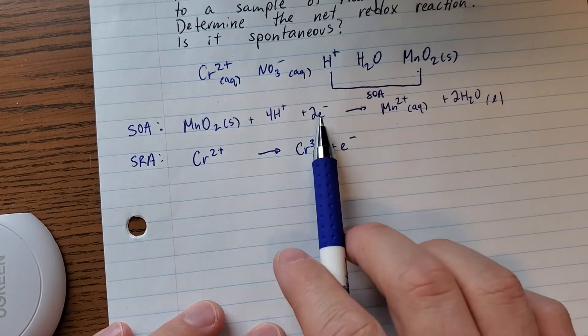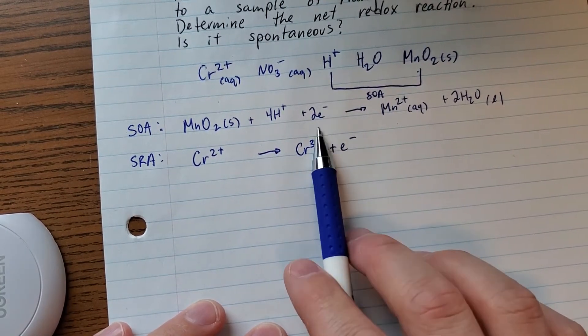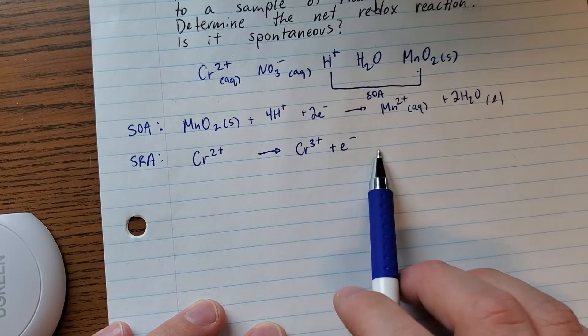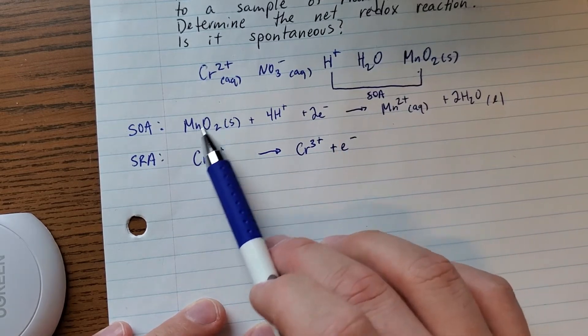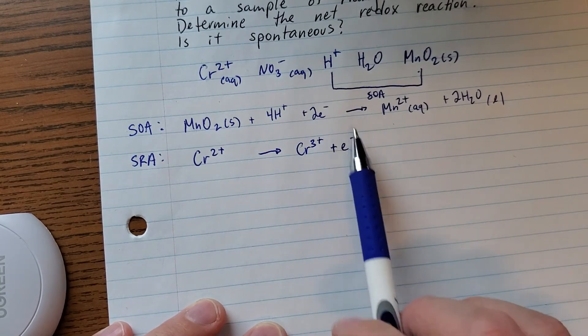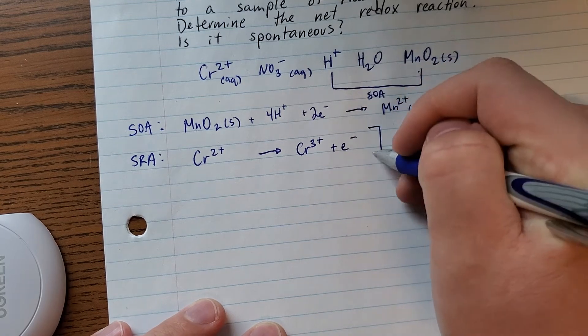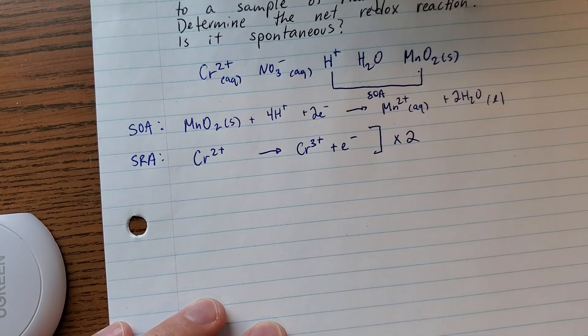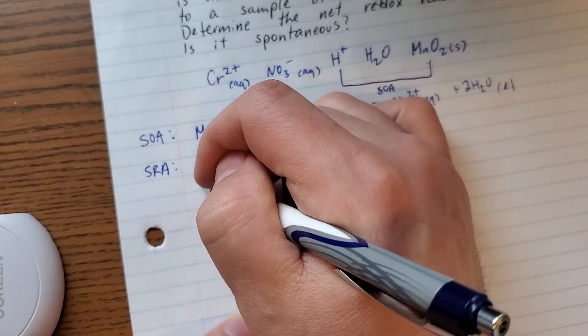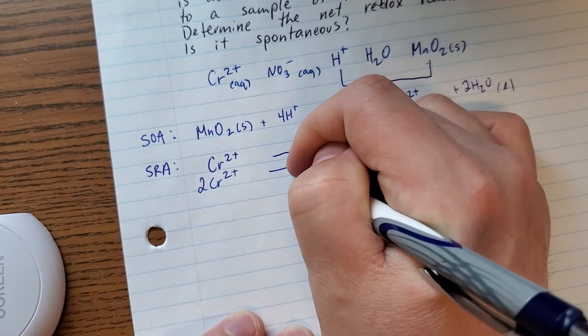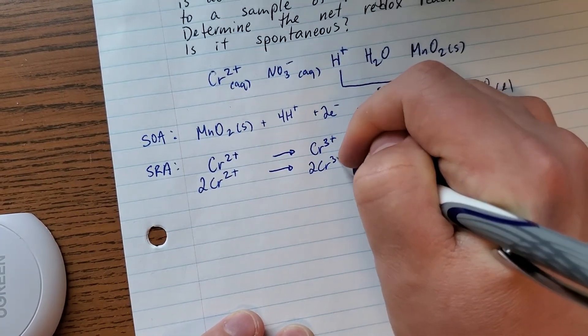Next step is we need to equate these electrons, because this electron is going to go into the manganese oxide and there has to be equal amounts. This one's easy. I just got to multiply this guy by 2. I'll write underneath what it looks like after it's multiplied by 2. No big deal.